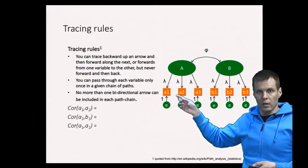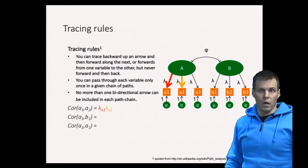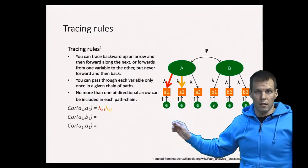We multiply everything along the way, so we have one factor loading and then another factor loading. That's lambda a1 times lambda a2, which is the correlation a1-a2, assuming these are standardized estimates.